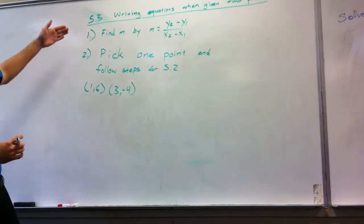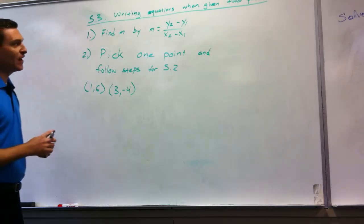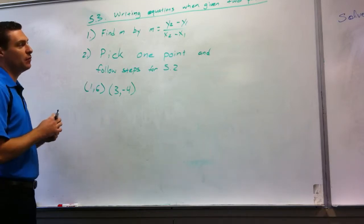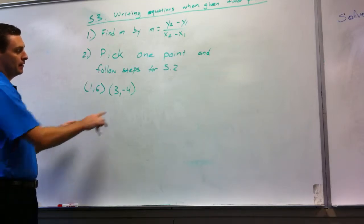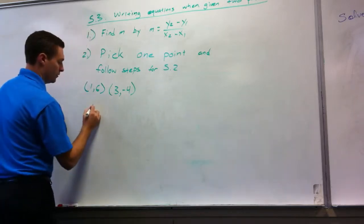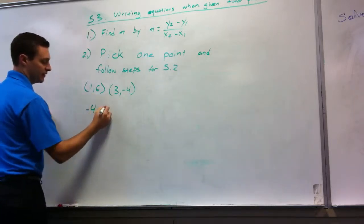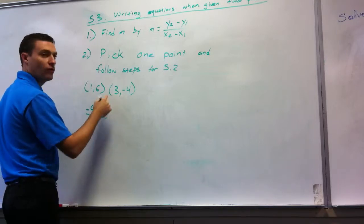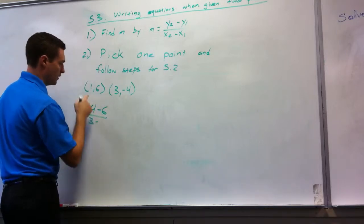So we're going to follow the steps laid out here, first by finding the slope using the slope formula, y2 minus y1 over x2 minus x1. So y2 would be negative 4 minus 6 over 3 minus 1.